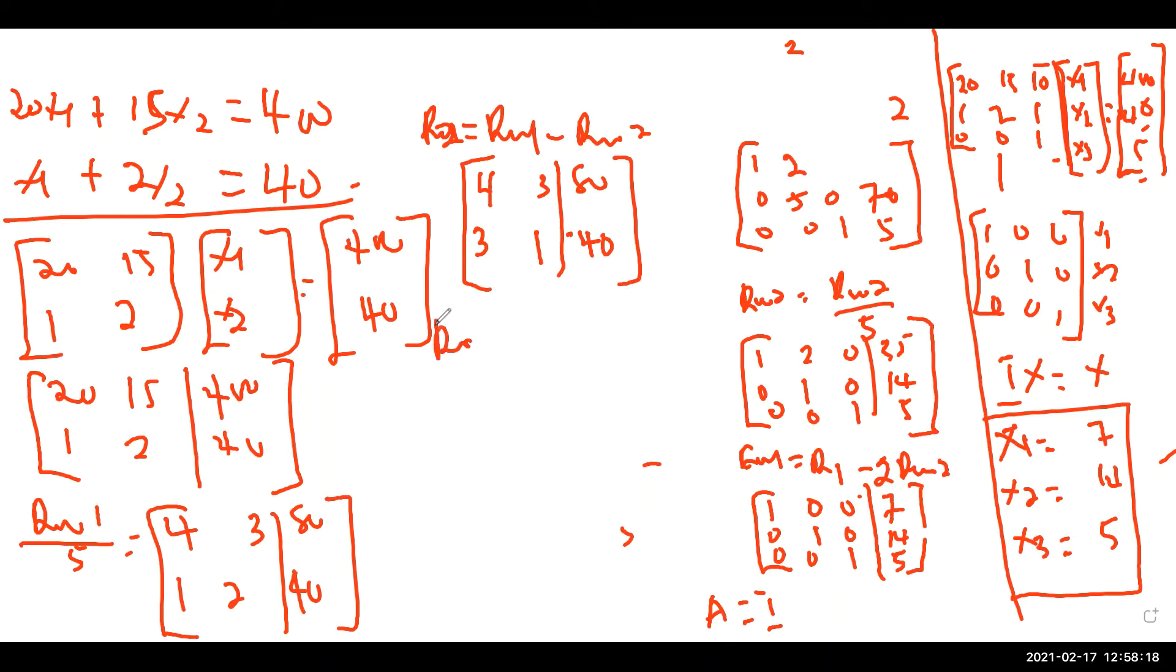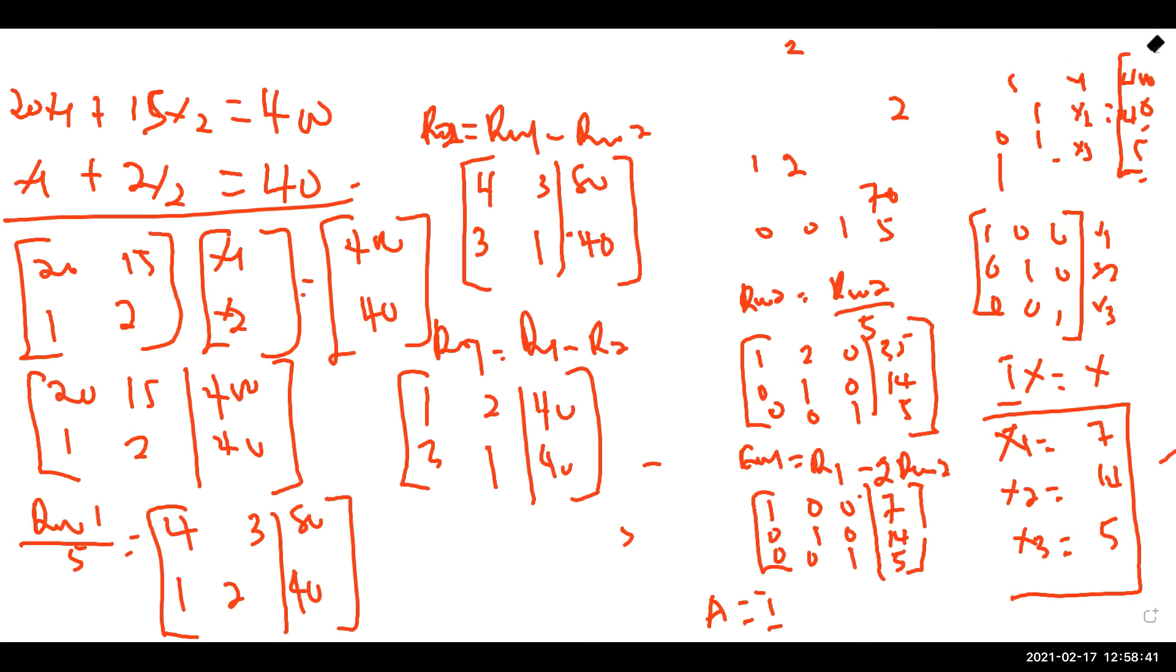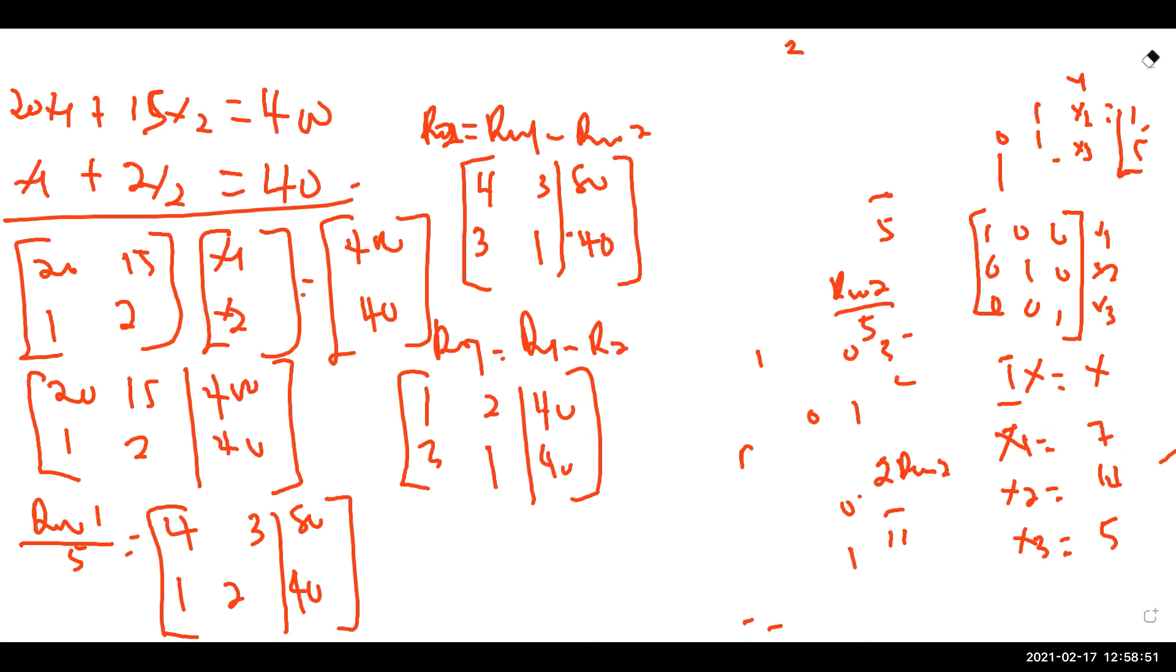Now this example gives us what we're looking for. So what can we do again? We can say that row one minus row two. This will give you one, this will give you two, this will be 40. We still have three and one, that's also 40. Let me clean this.